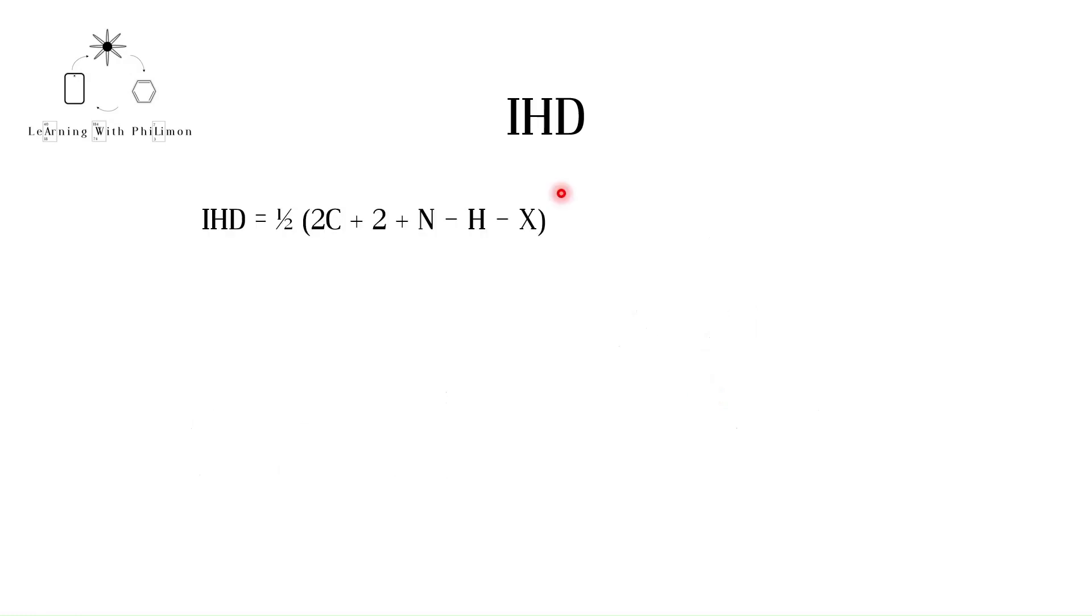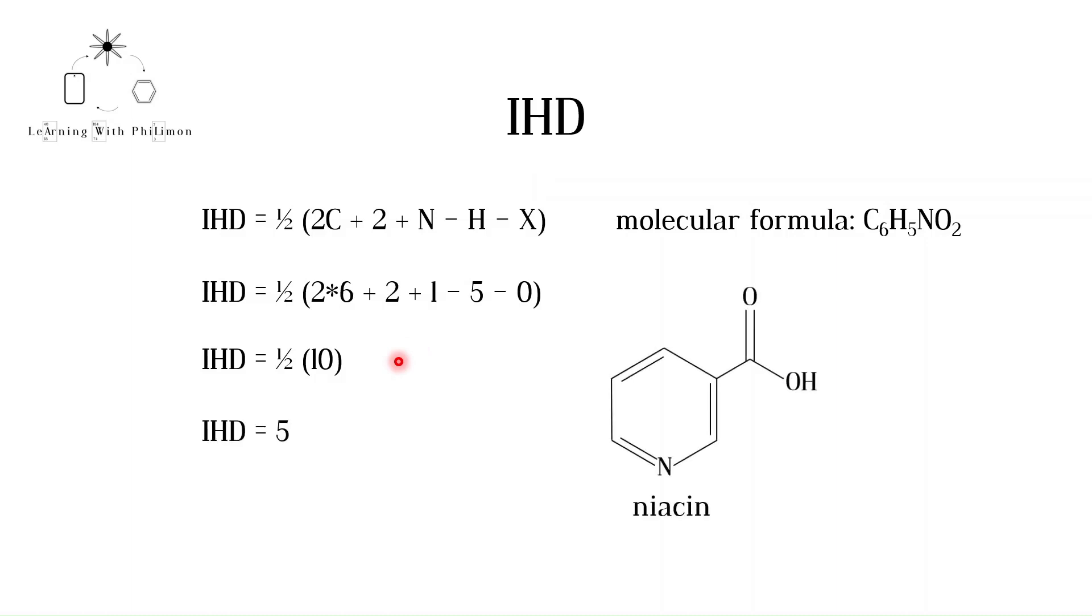You can calculate the IHD if you only have the empirical formula from elemental analysis or the molecular formula from mass spectrometry. There are two ways to do this. One way is to use the following equation, where C is the number of carbon atoms, N is the number of nitrogen atoms, H is the number of hydrogen atoms and X is the number of halogen atoms in the empirical or molecular formula. Let's say a compound has the molecular formula C6H5NO2. Substituting the number of atoms of each element, we get the following calculation. The IHD is equal to five. The compound I had in mind was niacin. You can see that it has four double bonds and one ring.